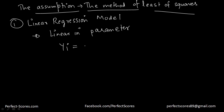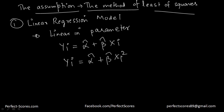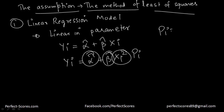For example, yi is equal to alpha hat plus beta hat into xi — that's a linear model. Or I can also have a model that is not linear in terms of variables but linear in terms of parameters. I can have y equal to alpha hat plus beta hat into xi squared. As long as the parameters are linear, that's fine — because I can always replace xi squared with a simple variable, say pi, where pi equals xi squared.